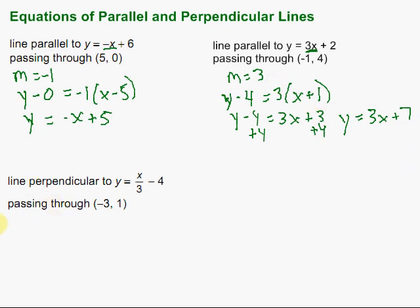Let's take a look at an example where we need to write the equation of a line that's perpendicular. When it's perpendicular, we look for the slope and then find the opposite reciprocal. In this one we have x over 3, which is the same as one third times x, so our slope is one third. The perpendicular slope is the opposite reciprocal: the opposite of one third is negative one third, and then we take the reciprocal — we flip it — so we have negative 3 over 1, which equals negative 3.